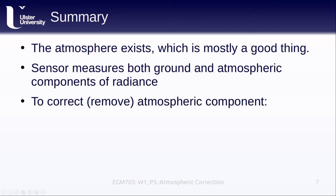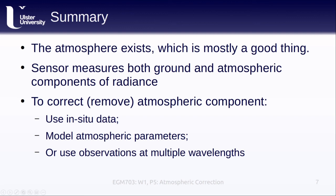To do this, we have to either use in-situ measurements from the same point in time that our image was acquired, model the atmospheric parameters to solve the radiative transfer equation, or use observations of multiple wavelengths. As with everything else, each of these methods has their own advantages or disadvantages, and which option we choose depends on our application, our data availability, and so on.